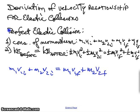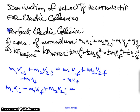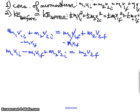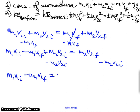What we're going to do is group together the masses rather than initial and final conditions. I'm going to subtract M1V1 final from both sides, giving M1V1 initial minus M1V1 final plus M2V2 initial equals M2V2 final. Then I'm going to subtract M2V2 initial from both sides to give this equation: M1V1 initial minus M1V1 final equals M2V2 final minus M2V2 initial.